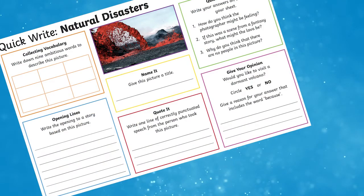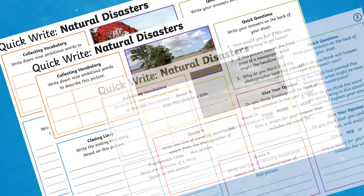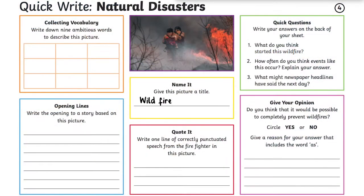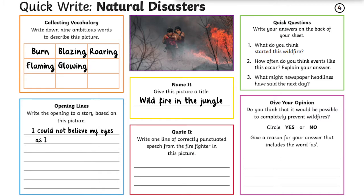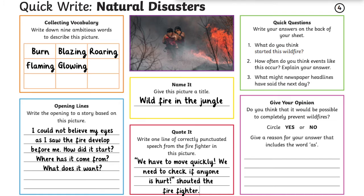If you're looking for more activities to supplement this topic, our natural disasters quick write activity maps are specifically aimed at children aged seven to nine. This pack is great as you can explore more about natural disasters and their impact on those around them. Each map includes a stimulus with a variety of question prompts to get children practising their creative writing skills, inference and prediction.